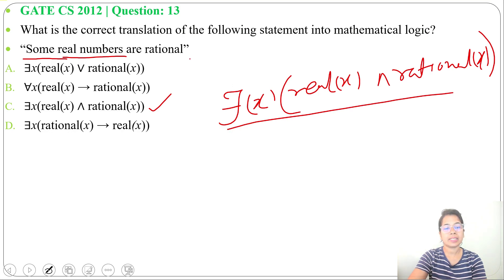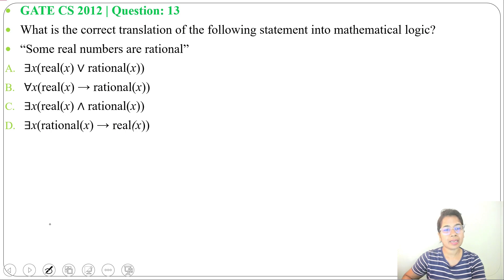It is there exists x: real(x) ∧ rational(x). Let's write the meaning of every option. Option A: there exists x: real(x) ∨ rational(x). So there exists a number x such that x is either real or x is rational. Here it's written x is real and rational, but according to this, x is either real or rational, any one of these.